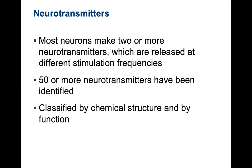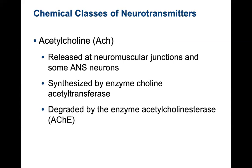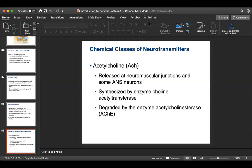There are over 50 different families of neurotransmitters that have been identified, classified by chemical structure and function. The one neurotransmitter to be aware of is acetylcholine, which we have seen with skeletal muscle. It is released at neuromuscular junctions and at some autonomic nervous system neurons — we'll see it again when we get into the autonomic nervous system. It is synthesized by the enzyme choline acetyltransferase and degraded by the enzyme acetylcholinesterase. And that is it for nervous tissue.